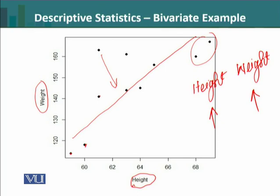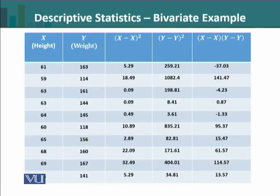Now we will look at the numerical measures: correlation and covariance. For the height variable and the weight variable, three calculations are important. One is the squared deviations from the mean for the x variable, similarly squared deviations from the mean for the y variable, and then the cross product of the deviations of x and y.